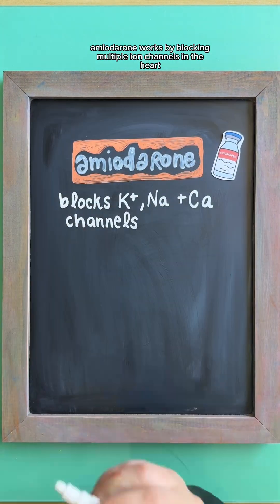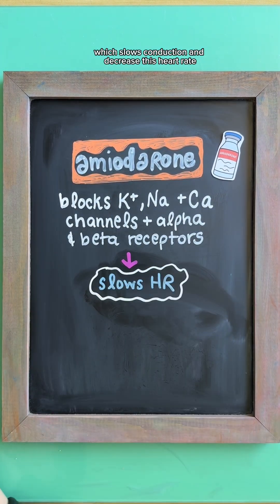Amiodarone works by blocking multiple ion channels in the heart, which slows conduction and decreases heart rate.